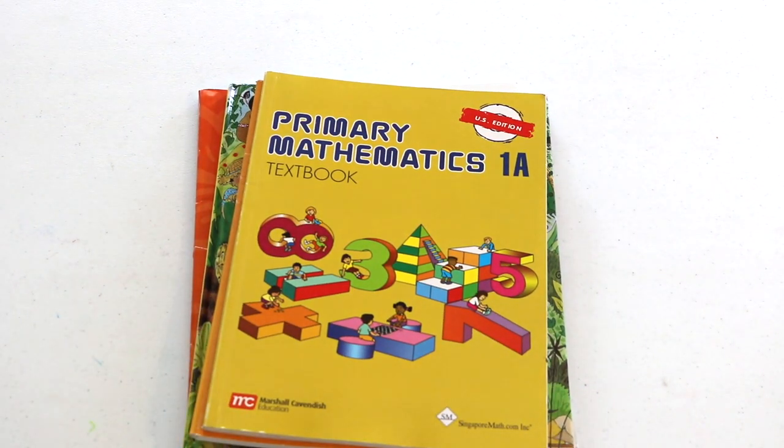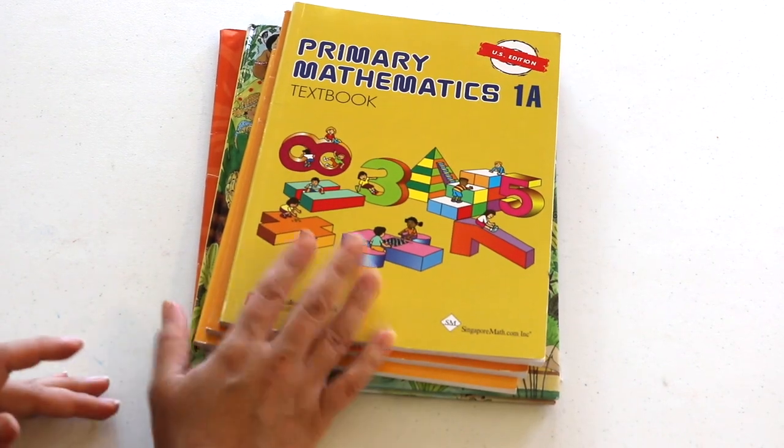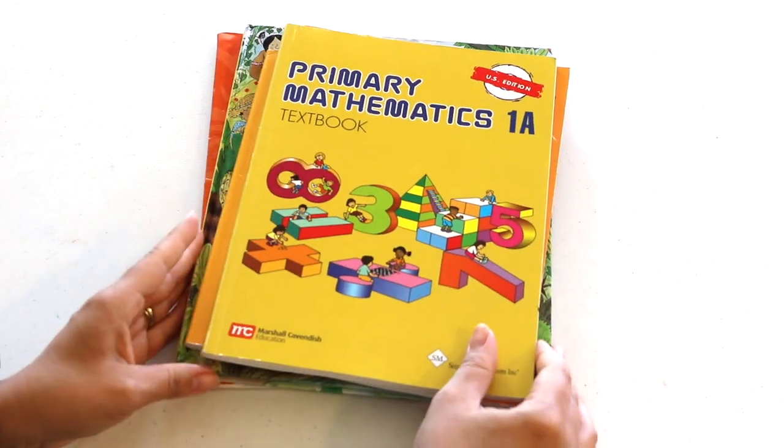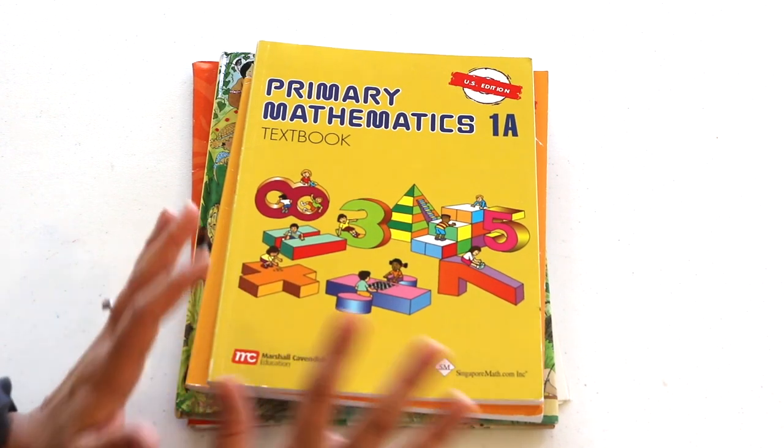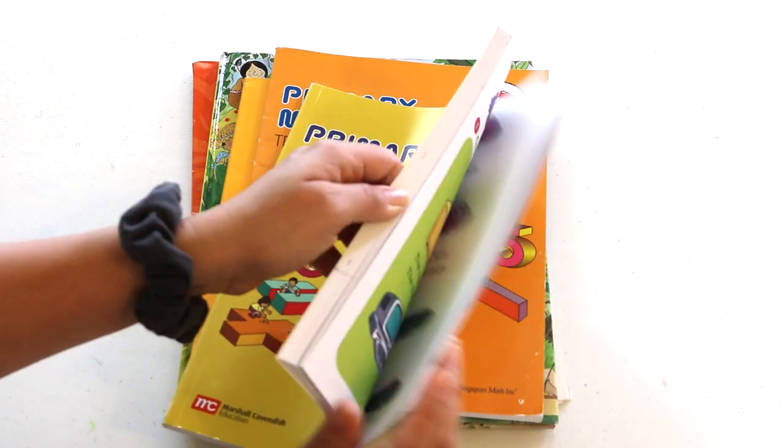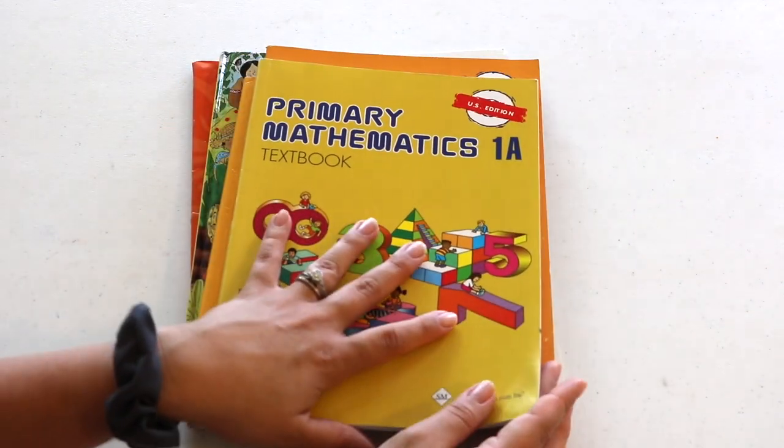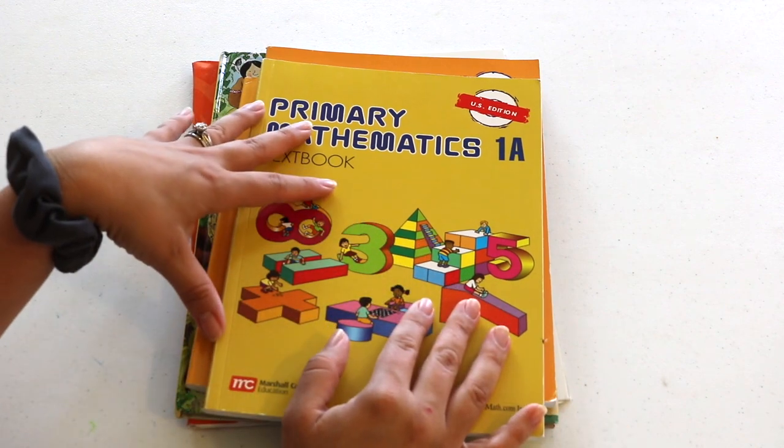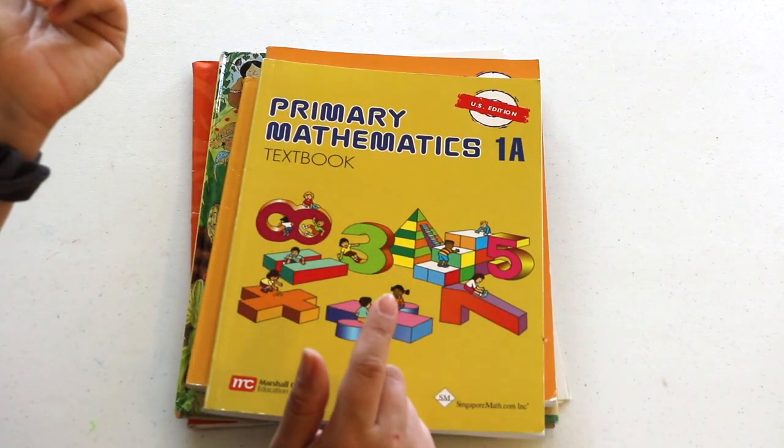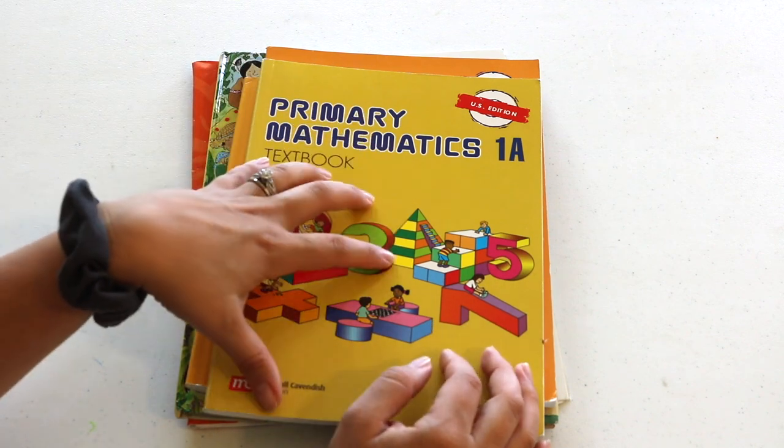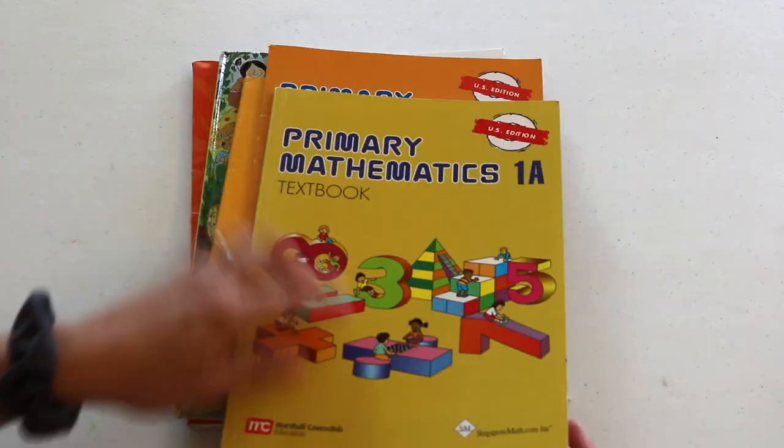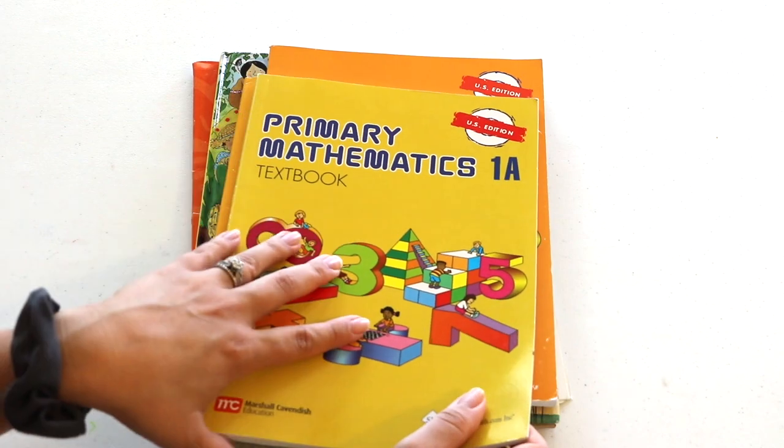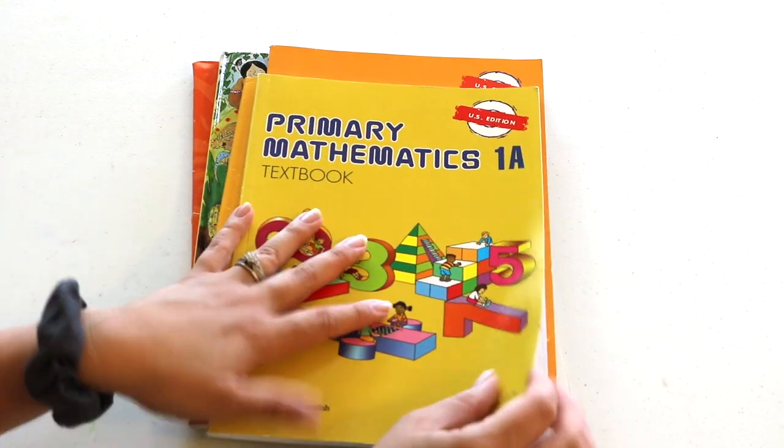Now I have some thrifted used books to show you as well. We're almost done. This is the last of it. At Goodwill I found Singapore Primary Mathematics 1A and 1B textbooks. We do use The Good and the Beautiful math curriculum and I love it. I can't say enough things about it, but I do like to purchase inexpensive workbooks for car trips, restaurant kits, or even just as a variation every so often. I usually buy workbooks from Target Bullseye when they have their back to school seasonal items out or from Dollar Tree, but I found these for just 99 cents.